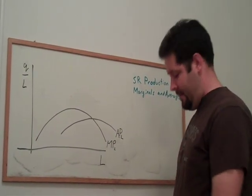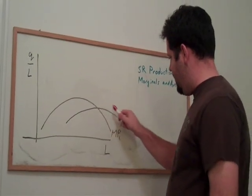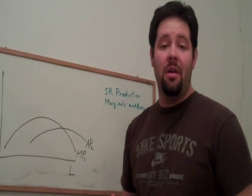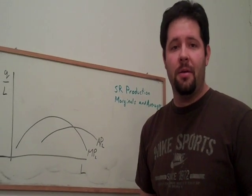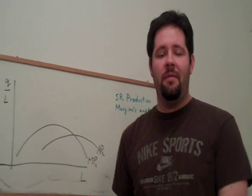What I have drawn is a graph of marginal product and a graph of average product. Let's start with something that's not on this graph, something called total product.